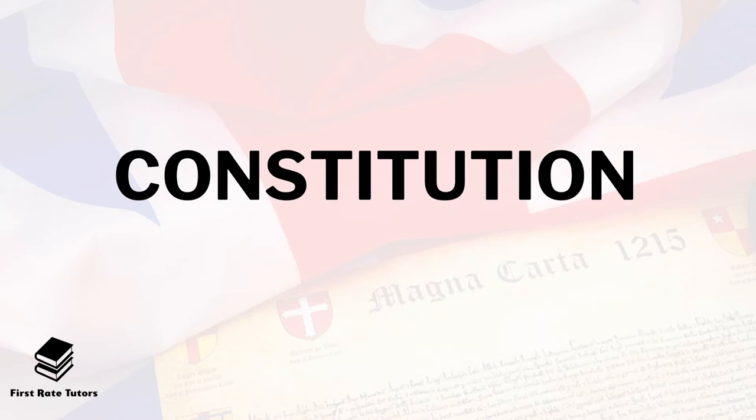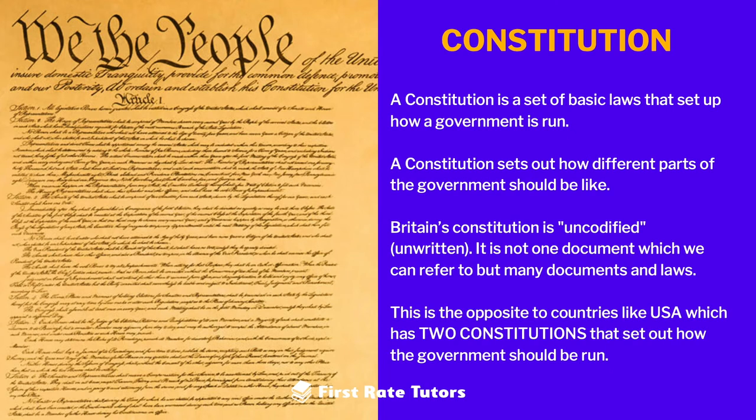When it comes to constitutions, what does it really mean? A constitution is essentially a set of basic laws that establish how a government is run in any country, setting out how different parts of a government should look like. Now bear in mind that in Britain it has an uncodified — in other words, an unwritten — constitution. This is in contrast to the USA which has a codified, written constitution.